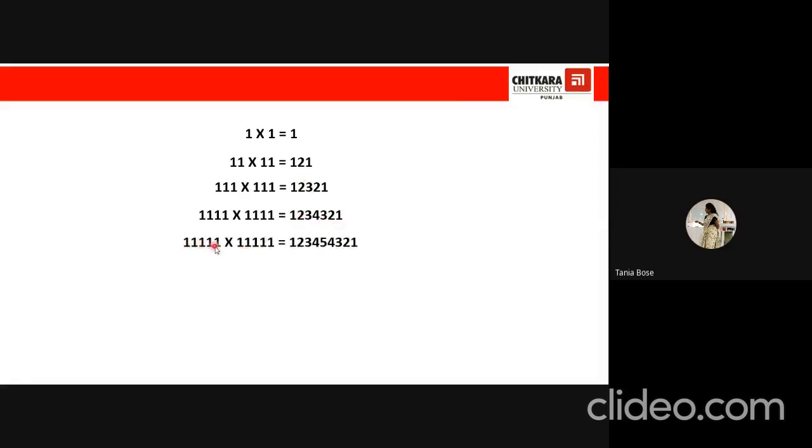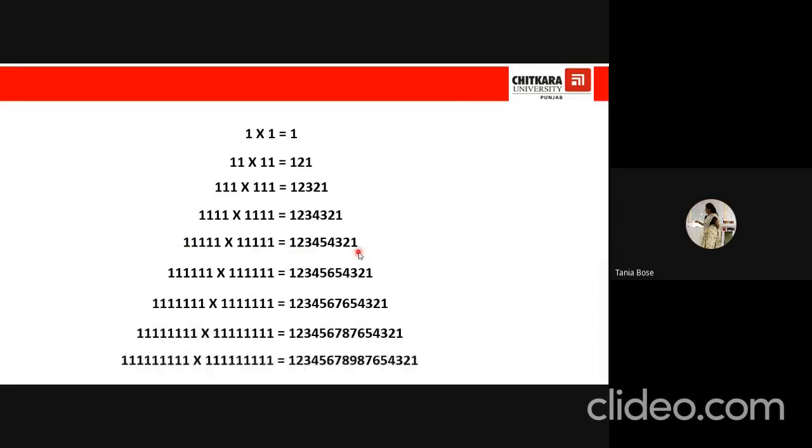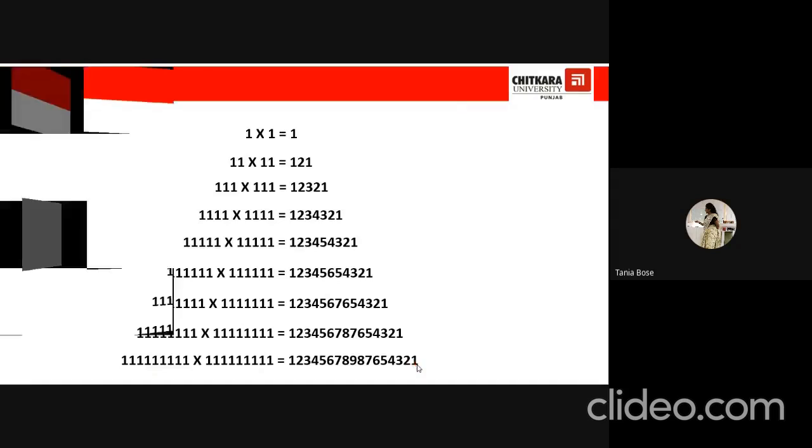Likewise, we have 11111 into 11111. So you can see the answer is from 1 to 5, we move on like this, and then we decrease on to 1. And similarly, you can check all these patterns. And take the last one. There are nine ones here. So in your answer, we start from 1, we move till 9, and then we decrease on to 1. Isn't it amazing?